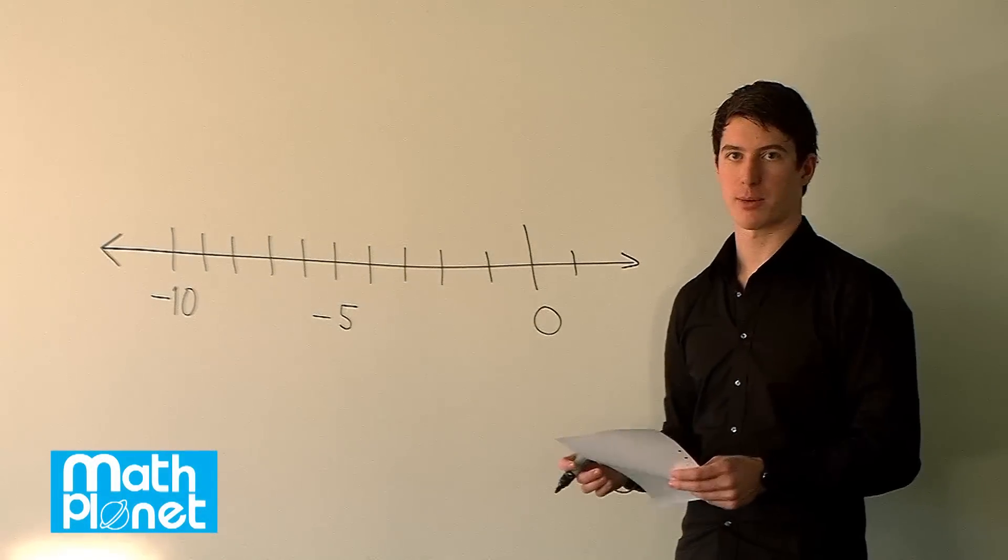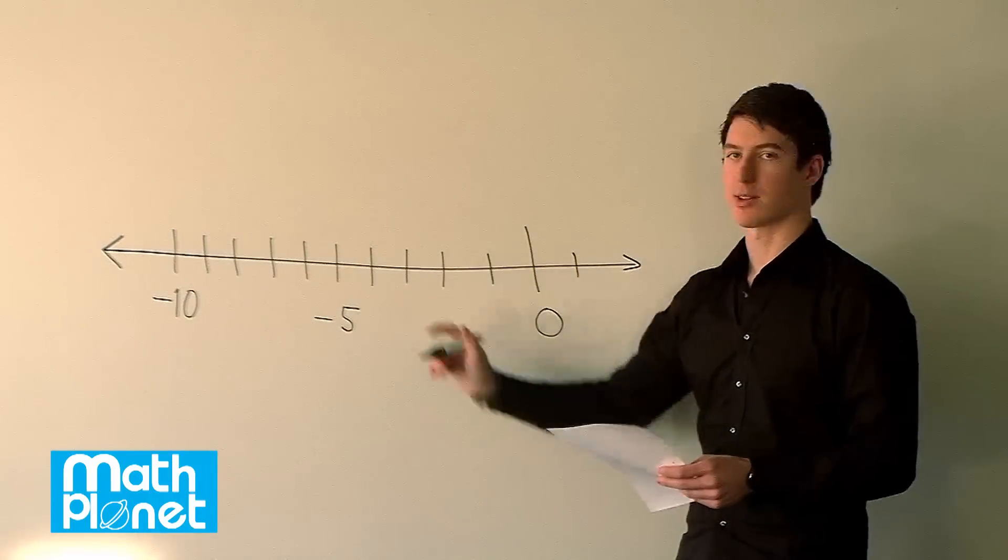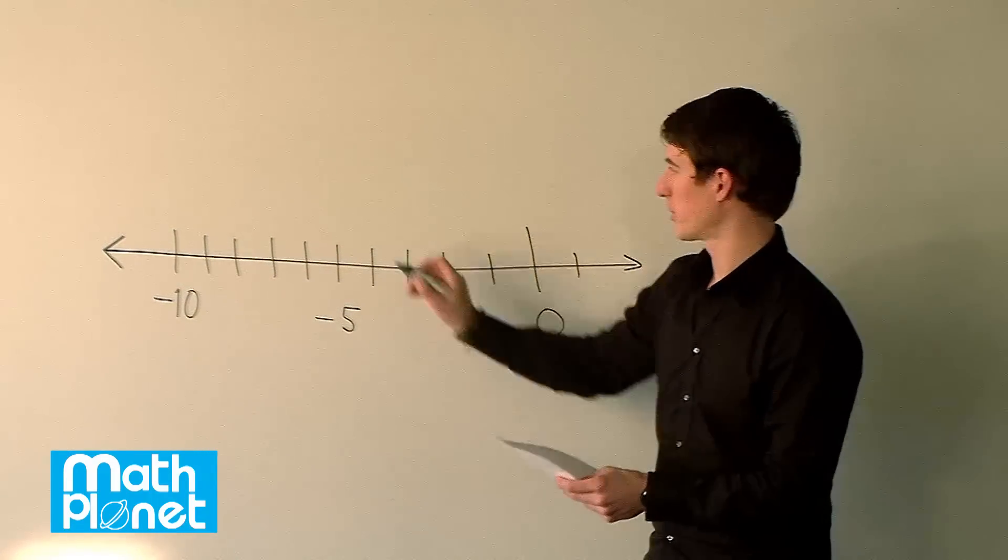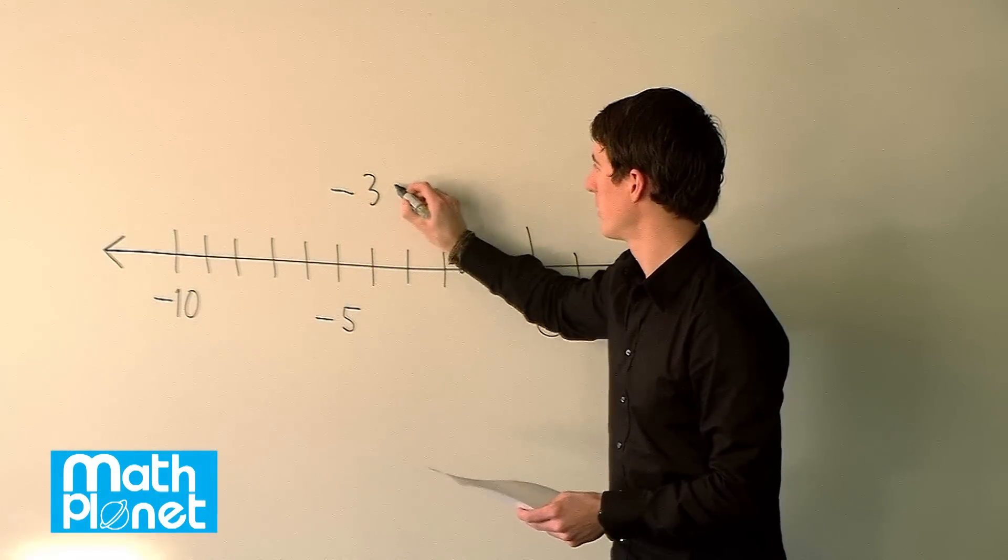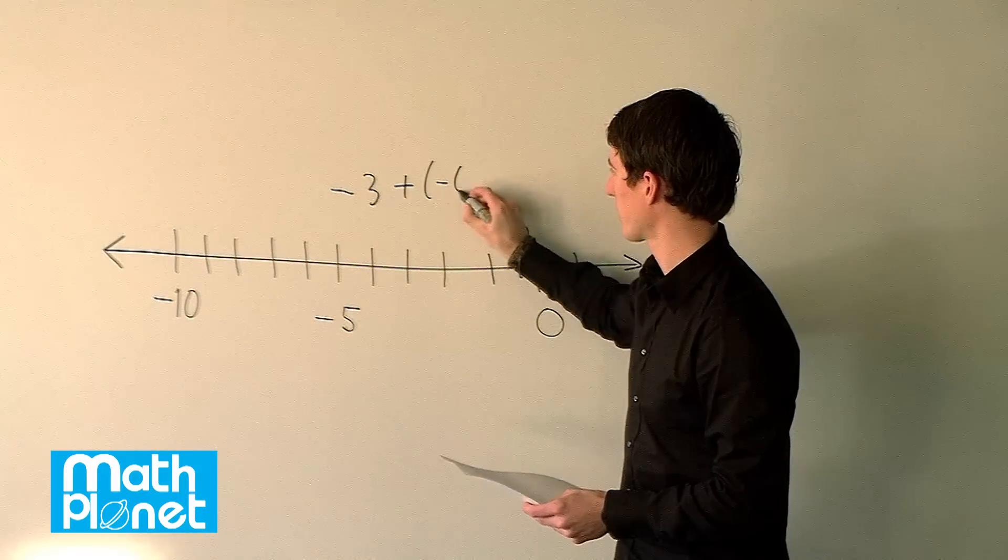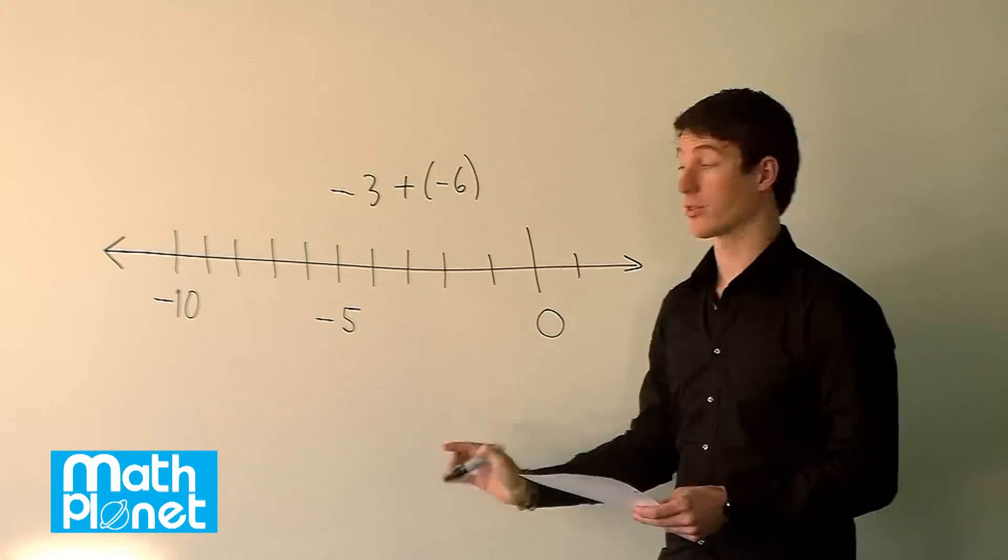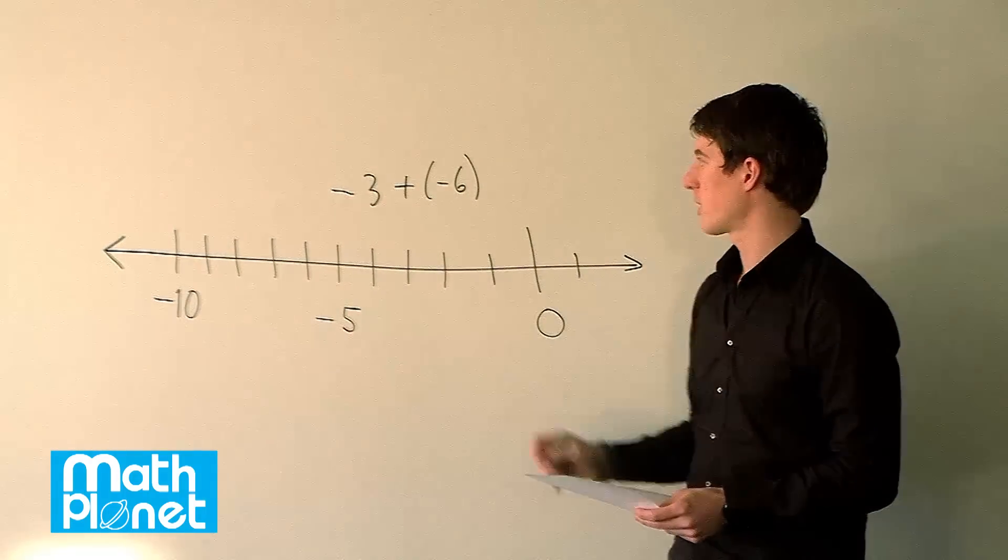We want to solve the following simple arithmetic problem using this basic number line. The problem reads negative 3 plus negative 6. We want to see what that equals, but we want to use our number line here to really understand what's happening.